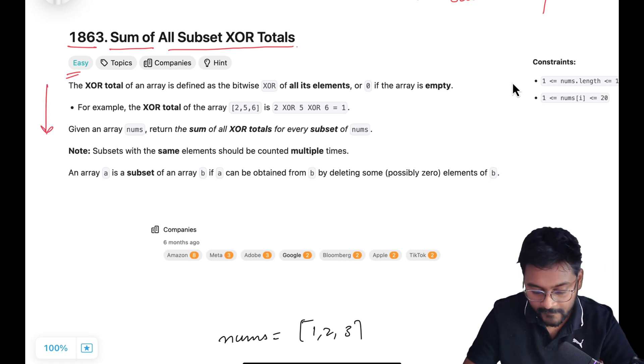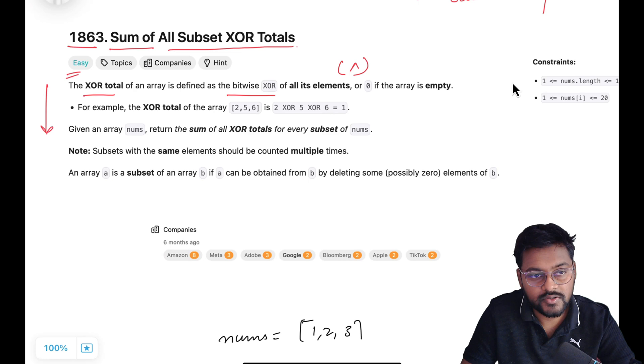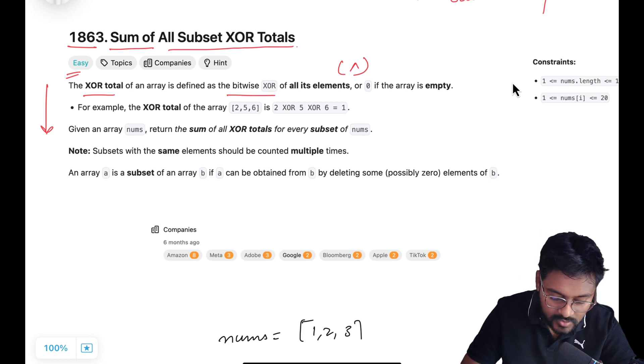Let's have a look at the problem statement. Here they are saying that XOR total is something which is obtained by taking bitwise XOR of all of the array elements. If you are having any array and you are taking XOR of all the elements, then that value will be called XOR Total as per the problem statement.